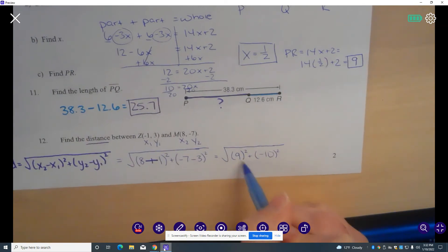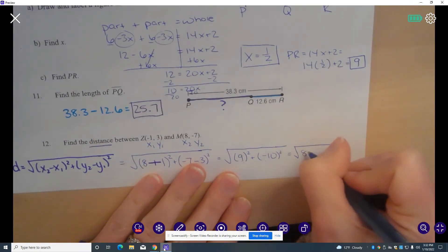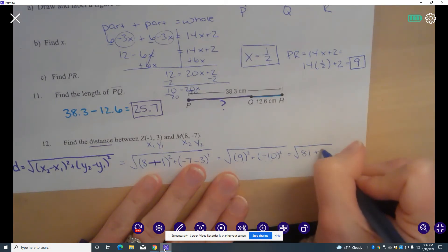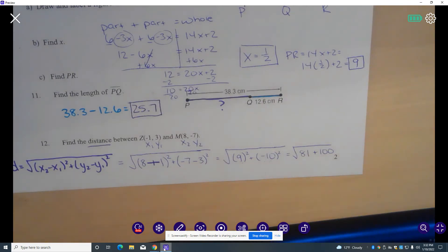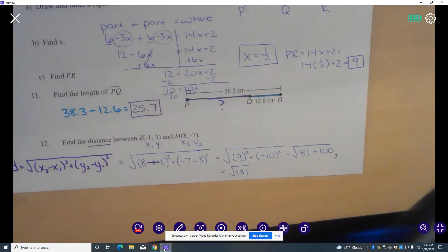Now I'm going to square each of these numbers. So 9 squared is 81. Negative 10 squared is positive 100. I'm going to add up those numbers. 81 plus 100 is 181.